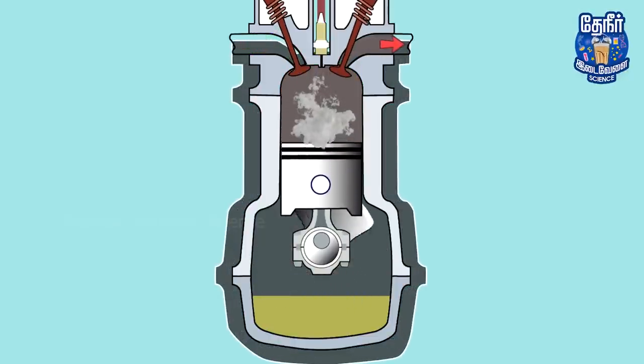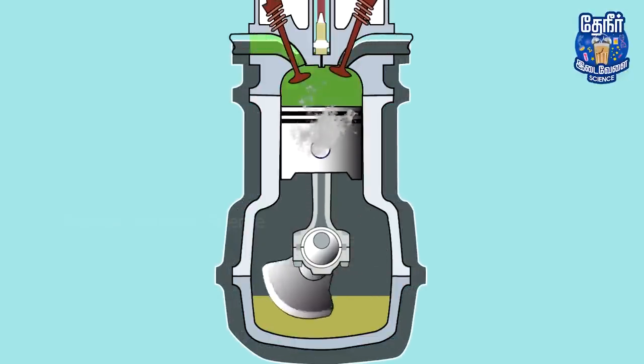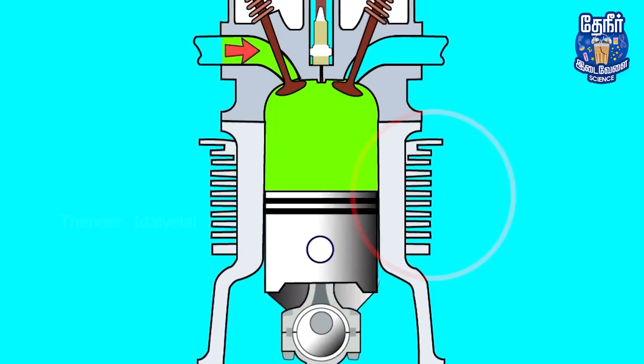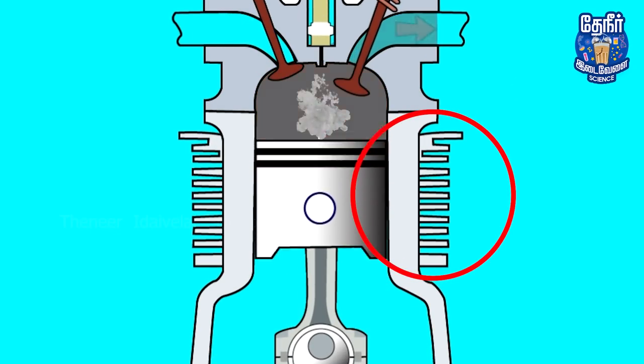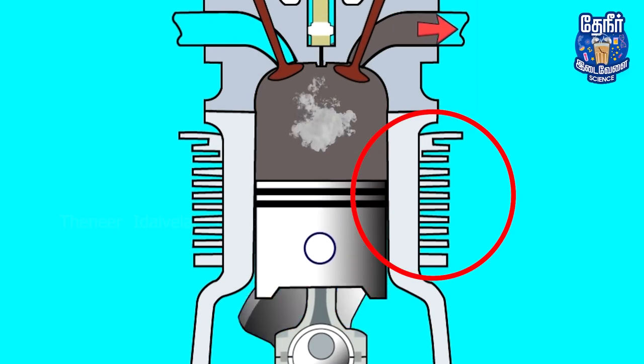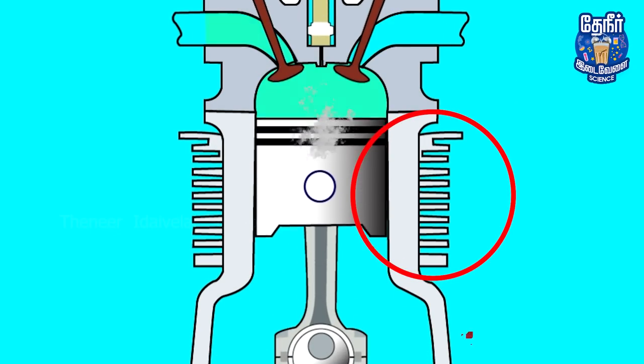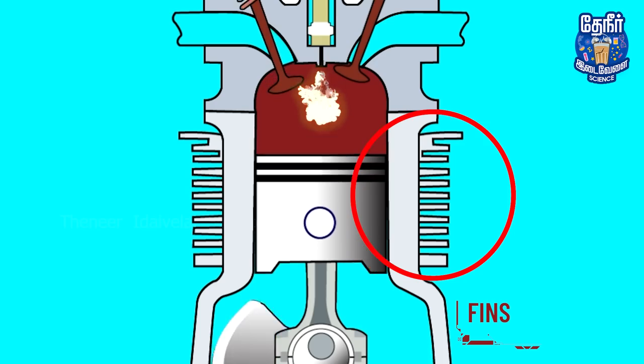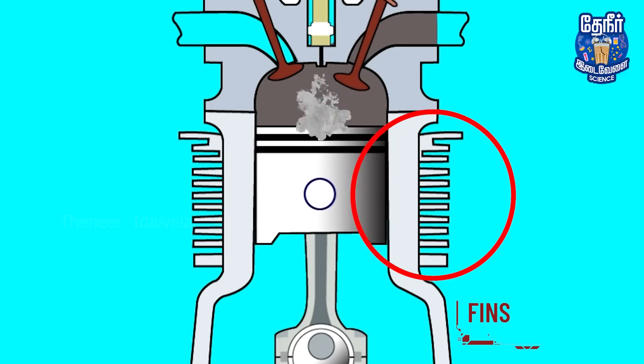If you do not use the bike, you will be able to use the bike. What we are doing here is that the cylinder block has a small gap. This design is called fins. If we use the fins, we can use the engine heat.